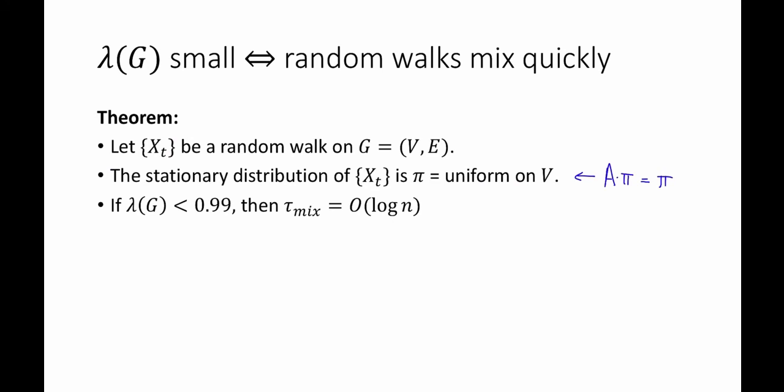Okay, now the third bullet point, and this is the interesting one, is that if lambda of G is small, let's say smaller than 0.99 or some constant, then the mixing time of this Markov chain, so the time for it to get close to its stationary distribution, close to uniform in total variation distance, is big O of log n.